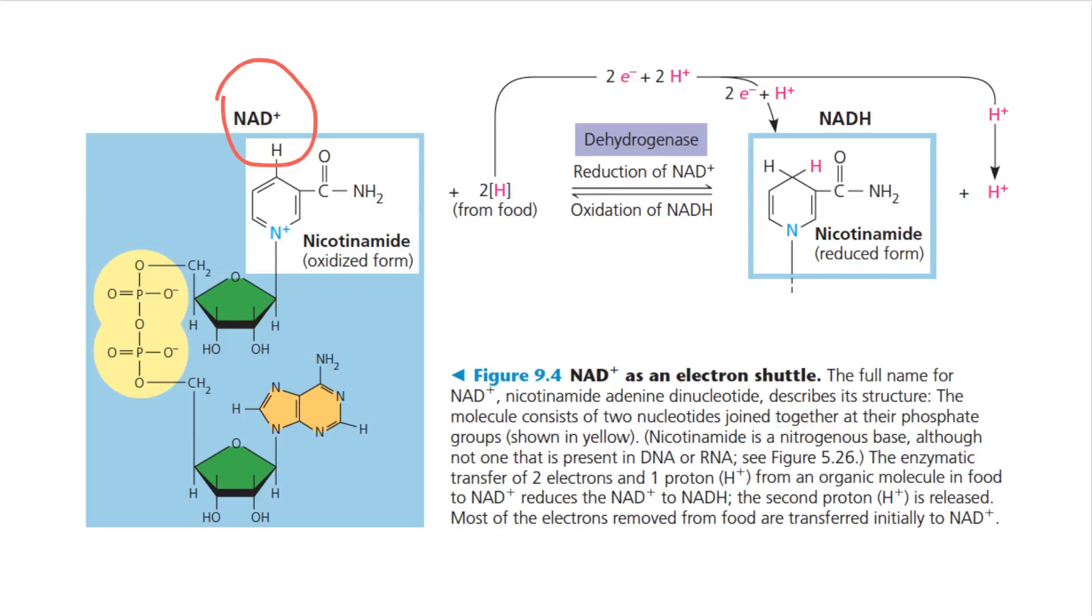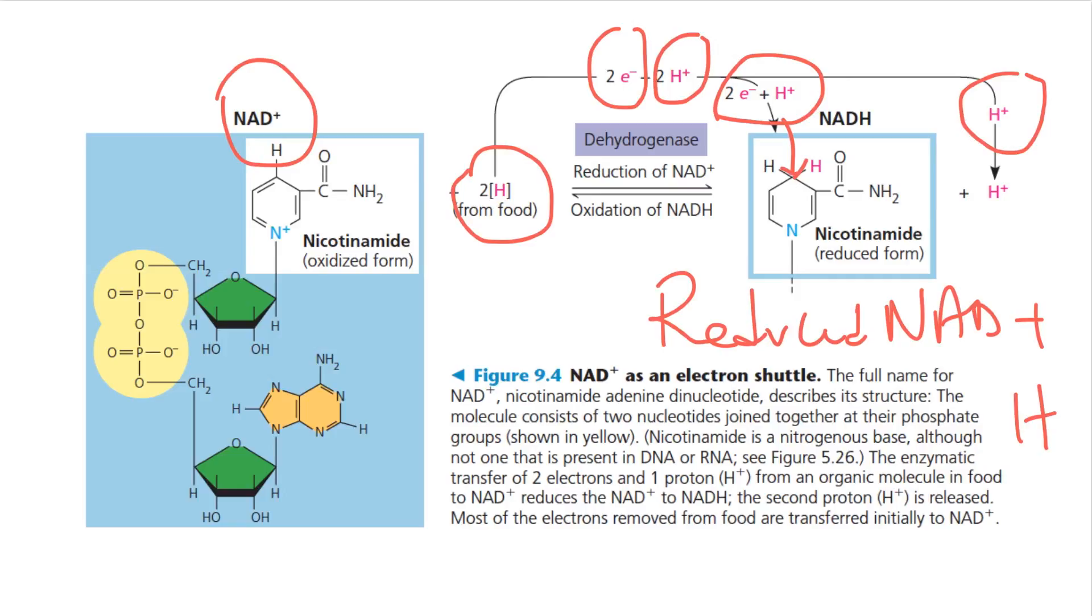You can see the process summarized here. So NAD plus receiving two hydrogen atoms, meaning two electrons and two protons. Two electrons and one proton is used to reduce the NADH and one hydrogen ion, one proton is released into the surrounding. So this forms the reduced NADH plus a hydrogen ion.